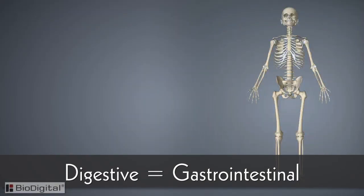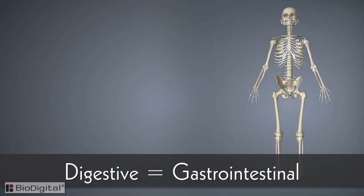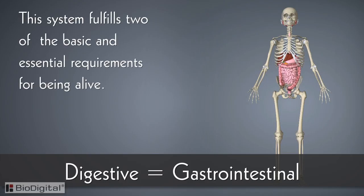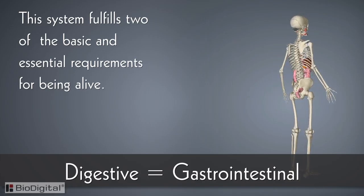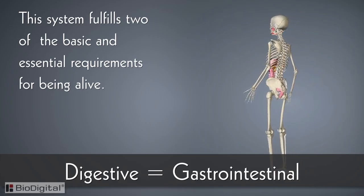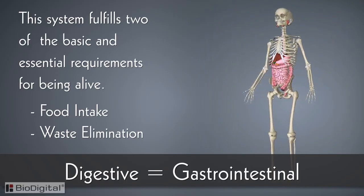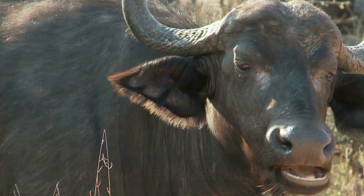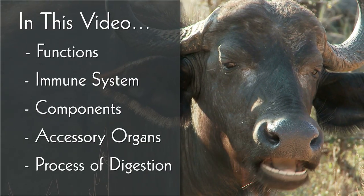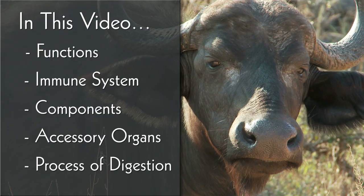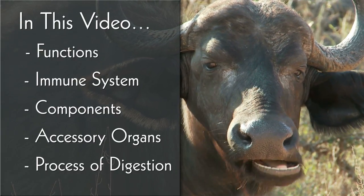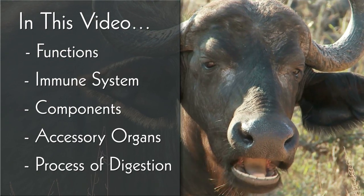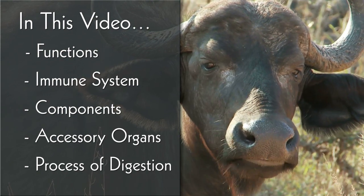The digestive system is also known as the gastrointestinal system. This system fulfills two of the basic and essential requirements for being alive, which are food intake and waste elimination. In this video, we will be discussing the functions of the digestive system, the connection with the immune system, the components and accessory organs that make it up, as well as the process of digestion.